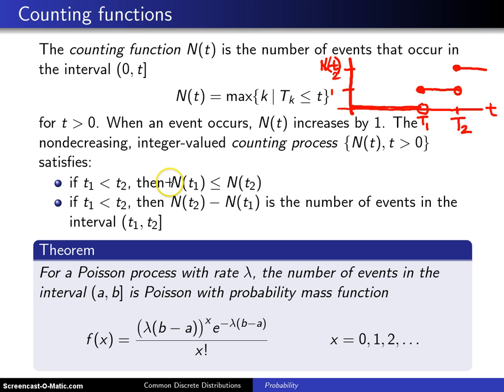Then the number of events that have occurred by t1 is less than or equal to the number of events that have occurred by t2. That's part of it being a non-decreasing function.